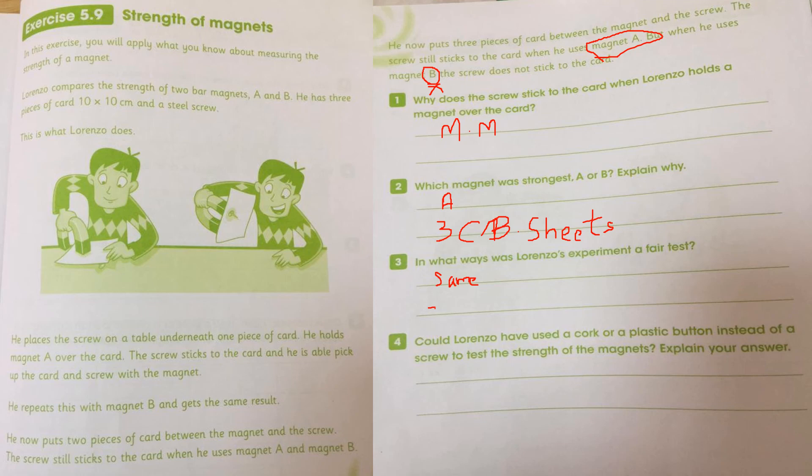Could Lorenzo have used a cork or plastic button? No. Why? Because they are not the magnetic materials. Plastic and cork, they are not the magnetic material. So they are not attract the screw. This is the answer of this worksheet, my dear.